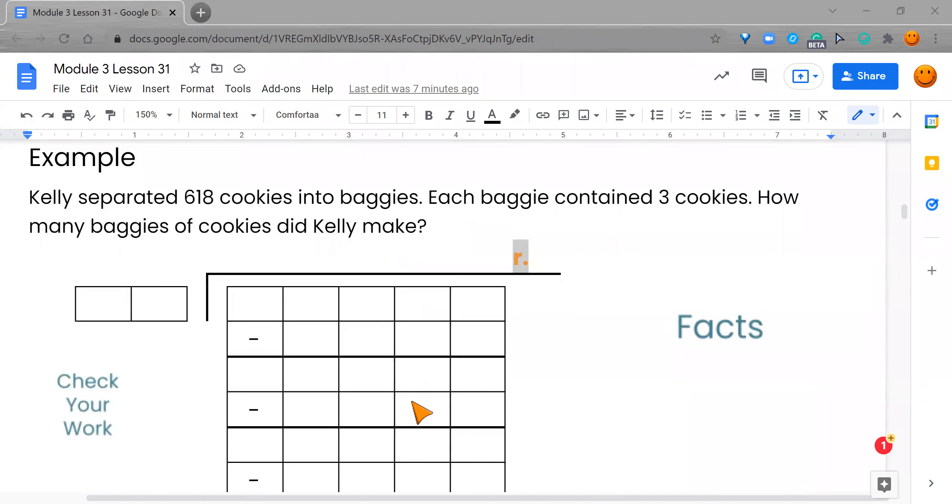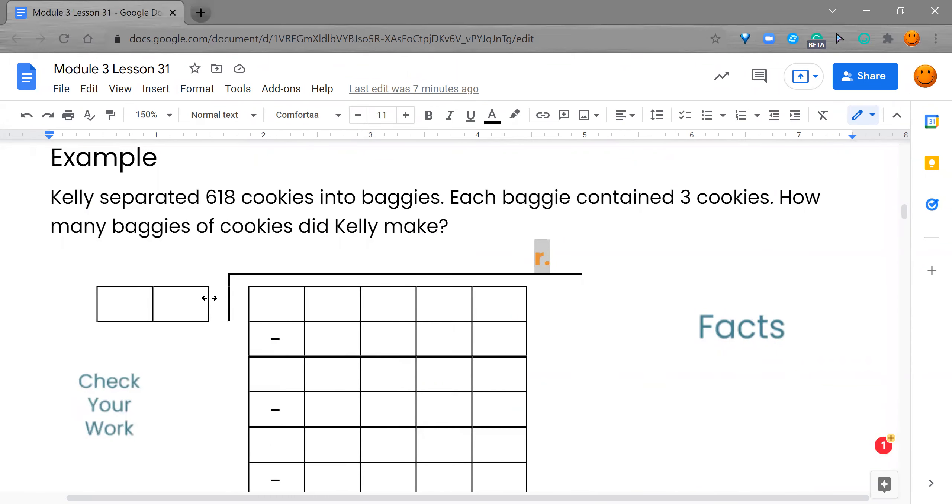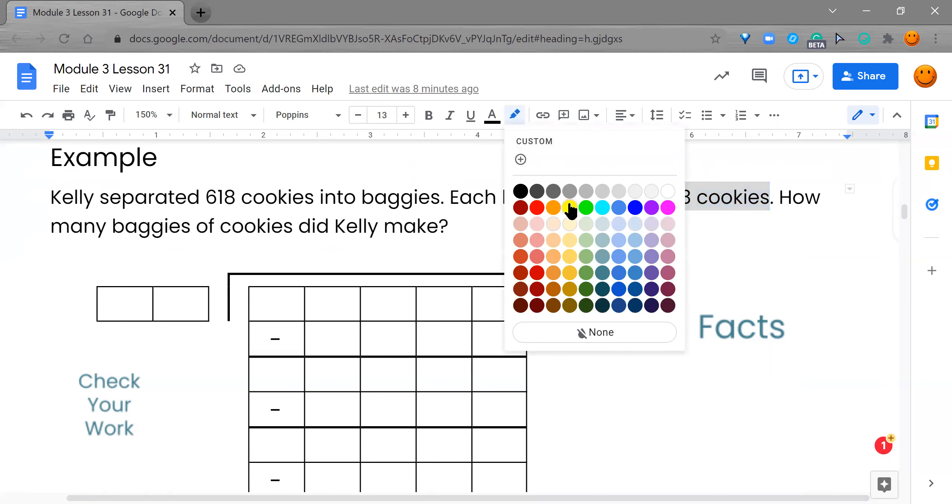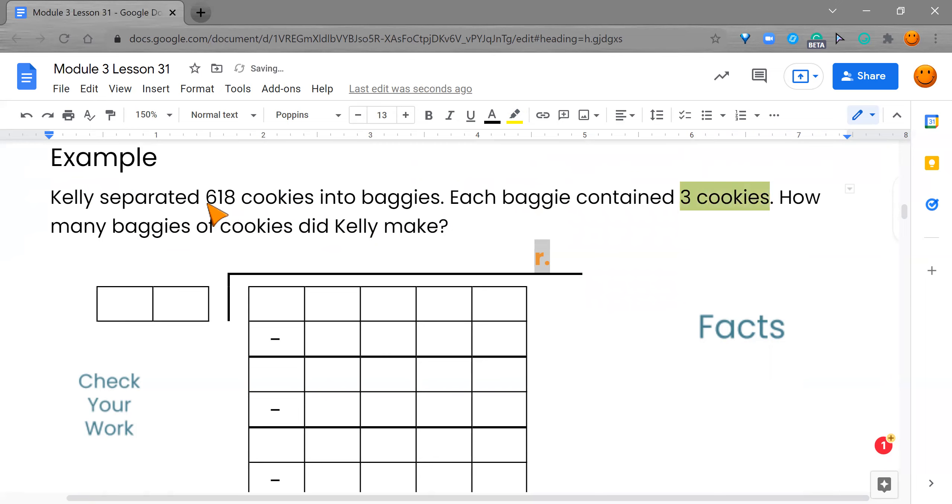So here we go. I get to read. I hope you guys enjoy. Here we go. Kelly separated 618 cookies into baggies. Each baggie contained three cookies. How many baggies of cookies did Kelly make? So the first thing I need to know is how many baggies of cookies did Kelly make? So I'm coming over here. It says each baggie contained three cookies. So I'm going to quick highlight this three. I'm thinking this is our divisor. And then right here, how many did we have in all? Yeah, 618.